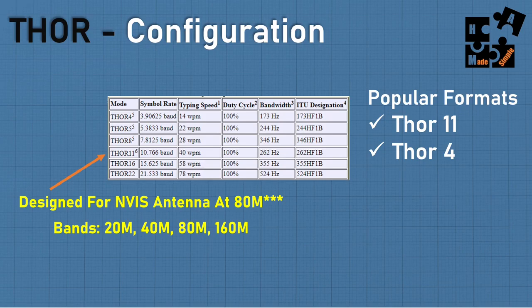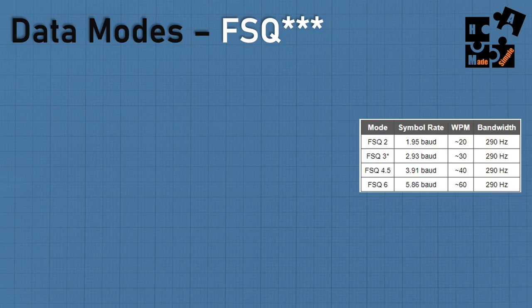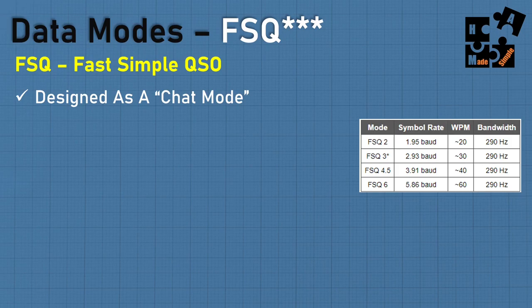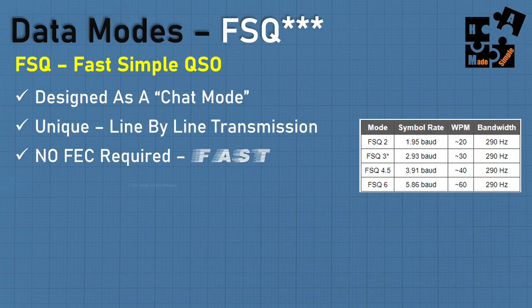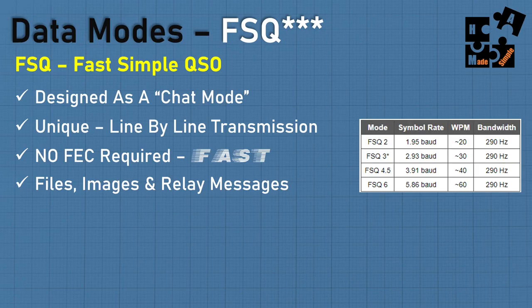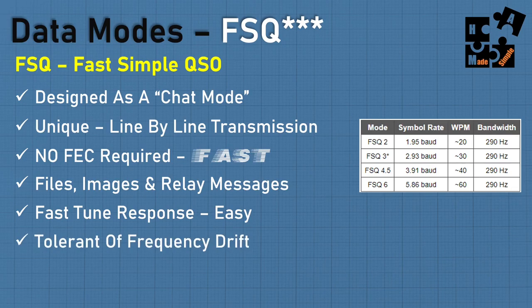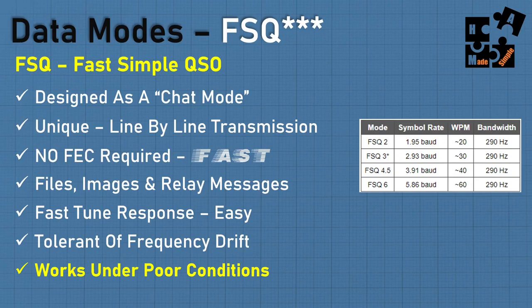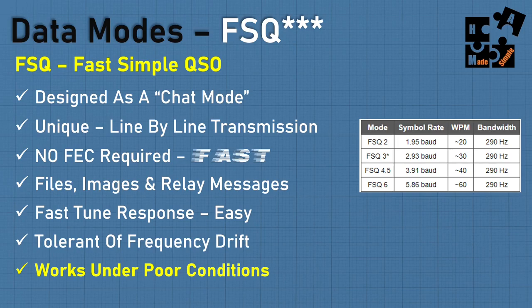Next comes FSQ — my most favorite within the FL Digi world. It stands for Fast Simple QSO. Think of it as a super chat mode because it does line-by-line transmission versus character-by-character. It's lightning fast, doesn't require any forward error correction software, and you can not only send files and images but also relay messages. It has fast tuned response, is easy to use, and is tolerant of frequency drift. It works under poor band conditions. If this piques your interest, check out the dedicated video in the description below. The default mode is 4.5.